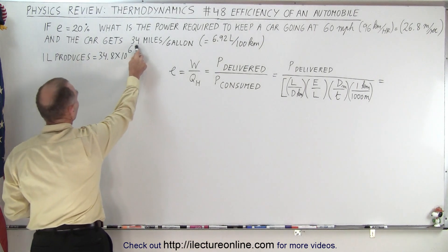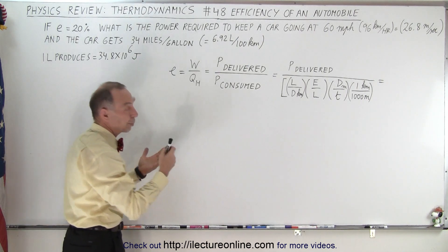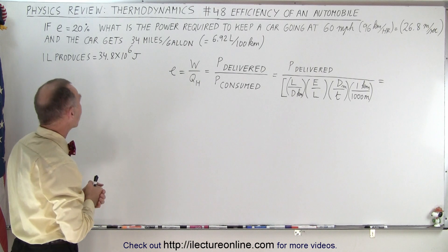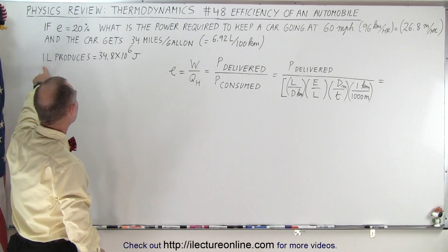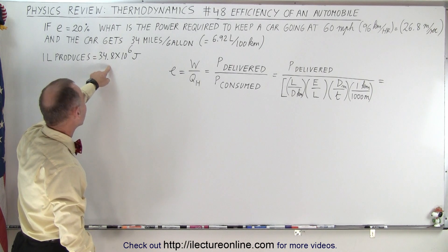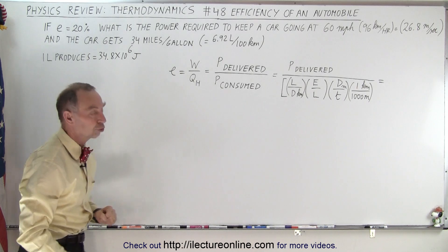Assuming that the car gets 34 miles to the gallon, which is 6.92 liters per 100 kilometers. And let's say that one liter of gasoline produces 34.8 million joules.